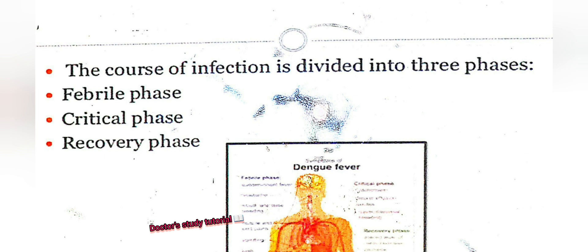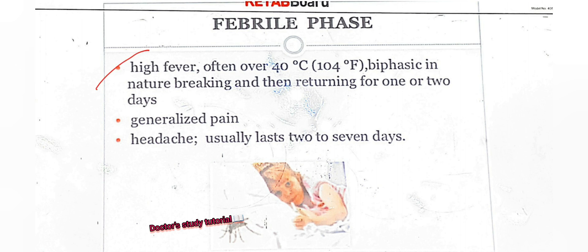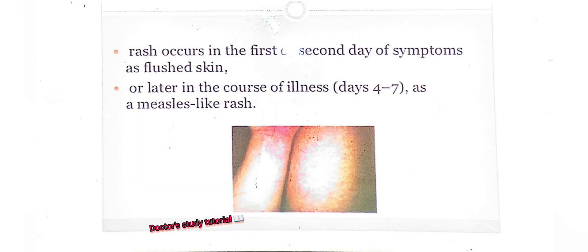The course of infection is divided into three phases: febrile phase, critical phase, and recovery phase. In the febrile phase, there is high fever often over 40°C or 104°F, biphasic in nature — breaking and then returning for one or two days. Generalized pain and headache usually last two to seven days. Rashes occur on the first or second day as flushed skin, or later on days four to seven as a measles-like rash.